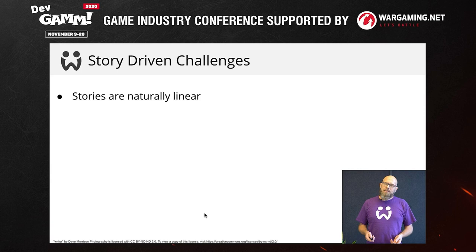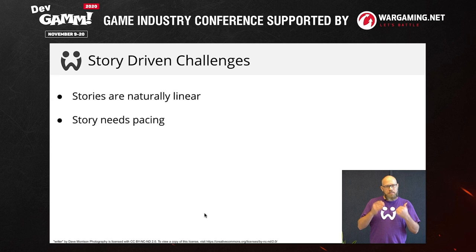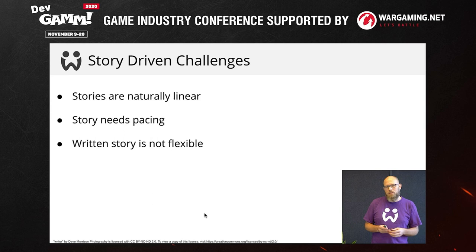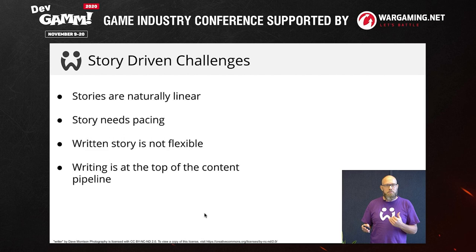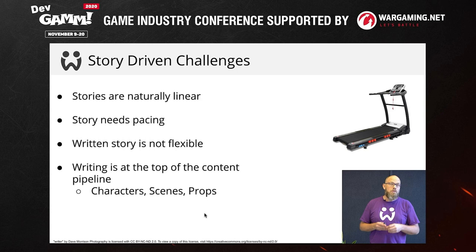Now let's talk about story-driven challenges. Stories are naturally linear things — plot elements want to go one after another, and it doesn't make a lot of sense if they don't. Stories need a particular pacing: you need to be able to follow along, not forget the thread, not forget who a person is — so you need to get story at regular intervals. And stories themselves are not flexible once written, because they're also at the very top of our content pipeline, a very long pipeline. We have characters and scenes and props, and all of these things need to be built way in advance. We call that the content treadmill — great for long-term employment, but difficult to change how the game works in the mid-time. So you need to plan ahead.